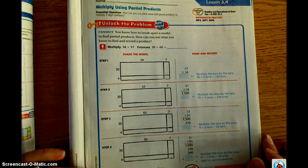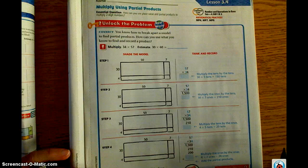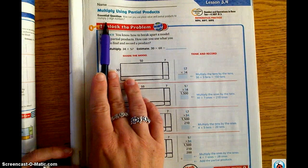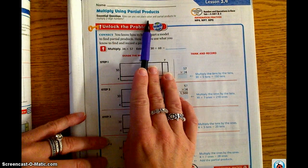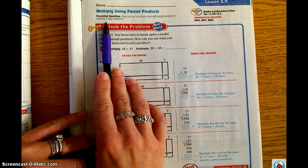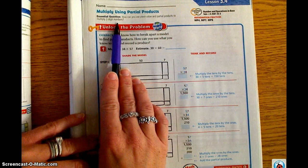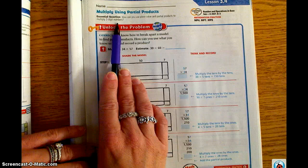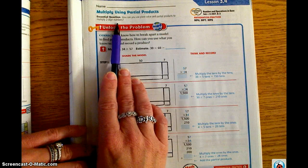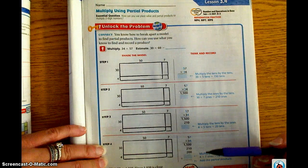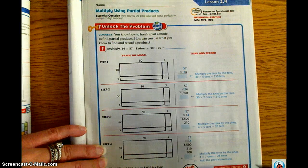Welcome to Lesson 3.4 Screencast. Today we are going to take a look at the essential question: how can you use place value and partial products to multiply two-digit numbers? For many of you, this should be review. We've already looked at two-digit numbers during Chapter 2, but we're just going to give you another way in case the traditional method does not work for you.